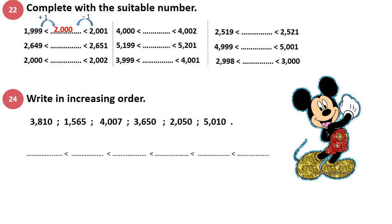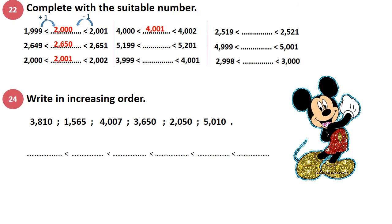Let's see the second example. 2,649 — I add 1 to 49. 49 plus 1 equals 50. So 2,650. Now 2,000 — what is the number that comes after 2,000? I add 1, so 2,001. 4,000 — what is the number that comes after 4,000? I add 1 to the 1s digit, so 4,001. 5,199 — I see 199, I add 1, replace the 9s with 0. How many 9s? 2. So I write 2 zeros, and the number after 1 is 2. So 5,200.